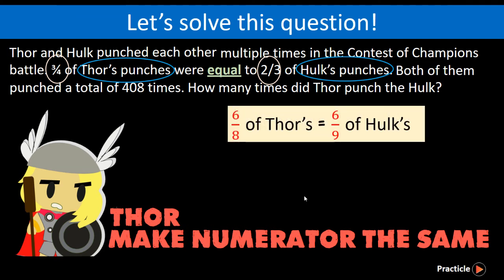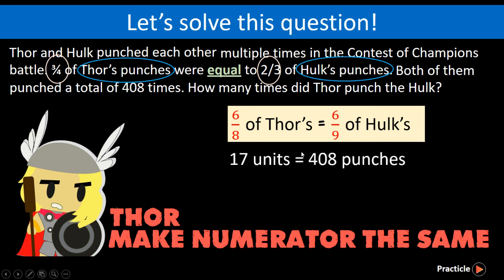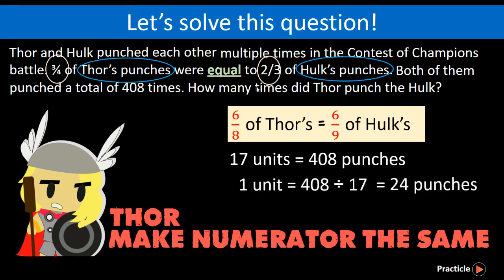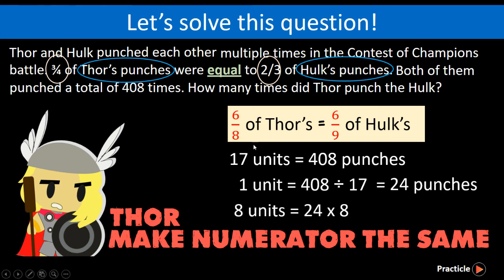Now that we know what each number represents, the next steps are the same as the model method. The total number of punches is 408, and the total number of units is 8 plus 9, which gives us 17 units. If 17 units equals 408 punches, we solve for 1 unit. To find the number of times Thor punched, we find 8 units: 24 multiplied by 8 gives us 192. Done!